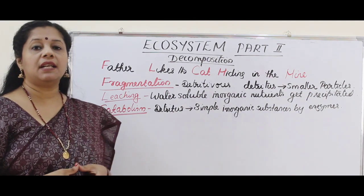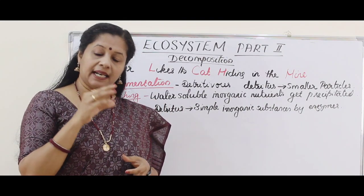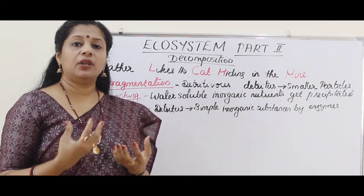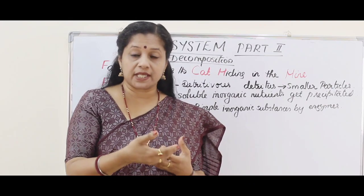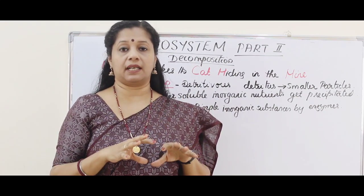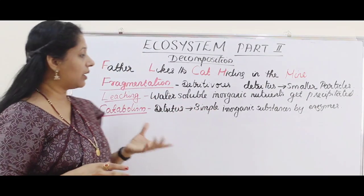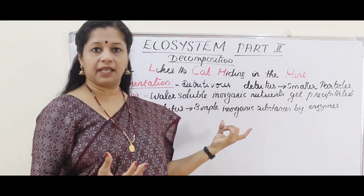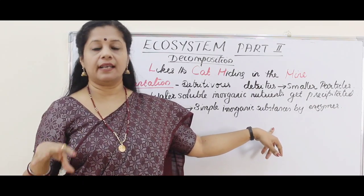The third step is catabolism — a breaking-down process. Here, microorganisms such as bacteria and fungi secrete their enzymes onto the broken-down detritus, which is then digested. These microorganisms are called saprotrophs and have extracellular digestion — they cannot ingest food; instead they digest it outside and absorb the nutrients. Through this process, complex substances are broken down into simple inorganic substances, and that is catabolism.